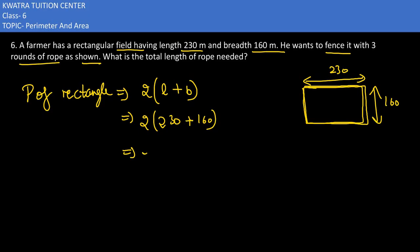So 2 is there, 230 plus 160. 0, 9, and 3 is there—390 into 2. So this would give you 0, 8, 1 is there—so 780 meters. One round is 780 meters.